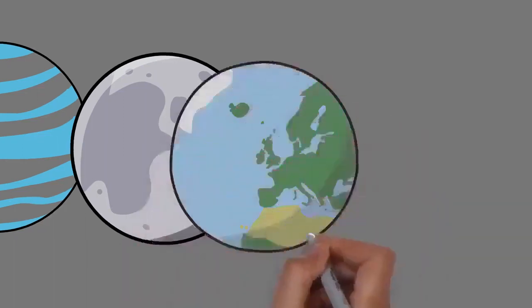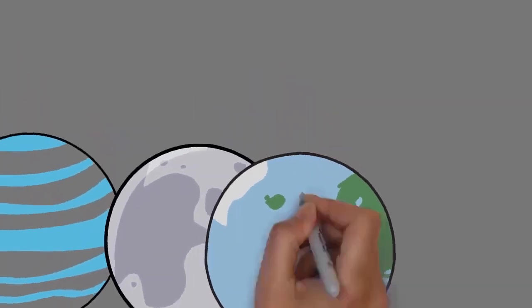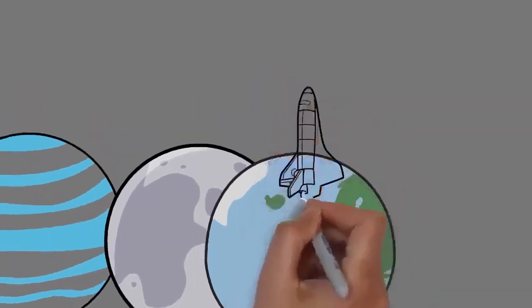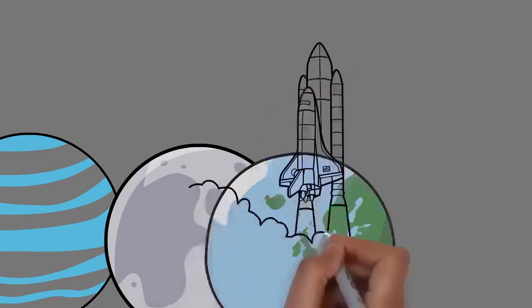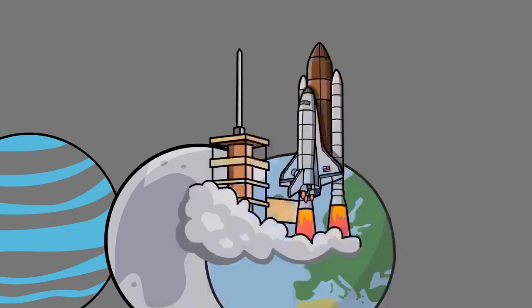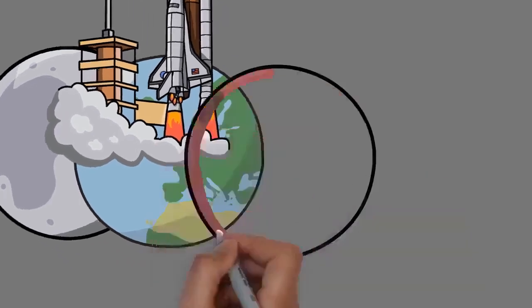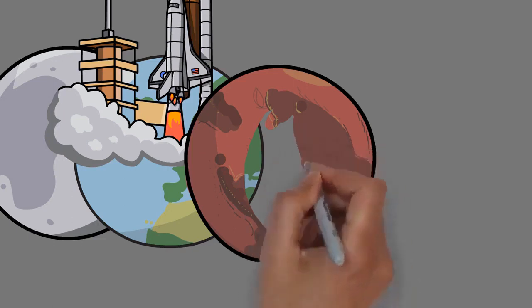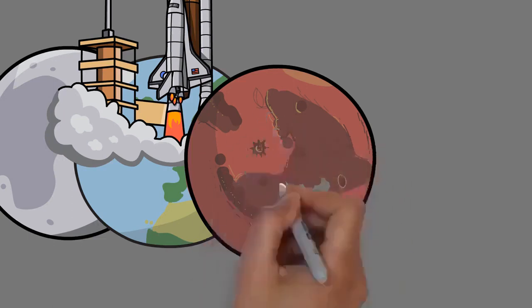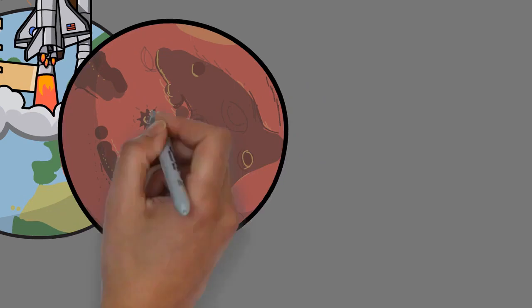The remaining 29.2% of Earth's surface is land, most of which is located in the form of continental land masses within one hemisphere, Earth's land hemisphere. Most of Earth's land is somewhat humid and covered by vegetation, while large sheets of ice at Earth's polar deserts retain more water than Earth's groundwater, lakes, rivers, and atmospheric water combined.